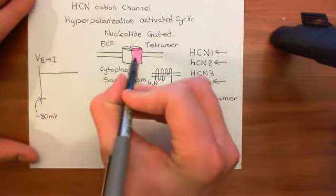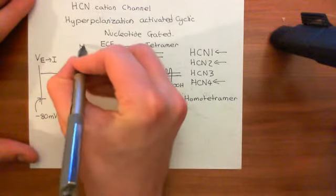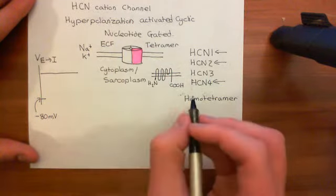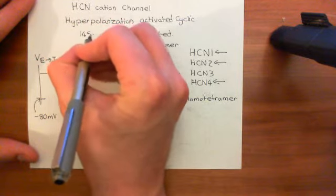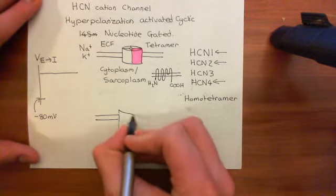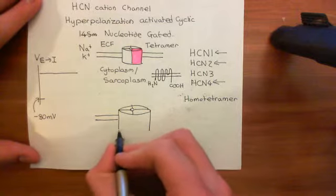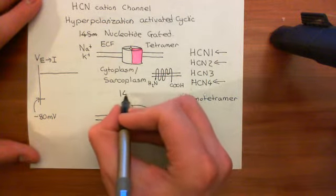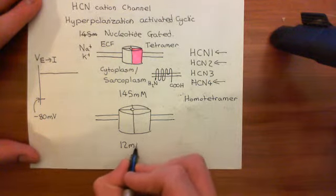When they open, they conduct sodium and potassium ions. Let's think about the concentration gradients across the cell membrane. The extracellular concentration of sodium is 145 millimolar, and the intracellular concentration of sodium is around 12 millimolar - about a 12-fold gradient favouring the movement of sodium in.